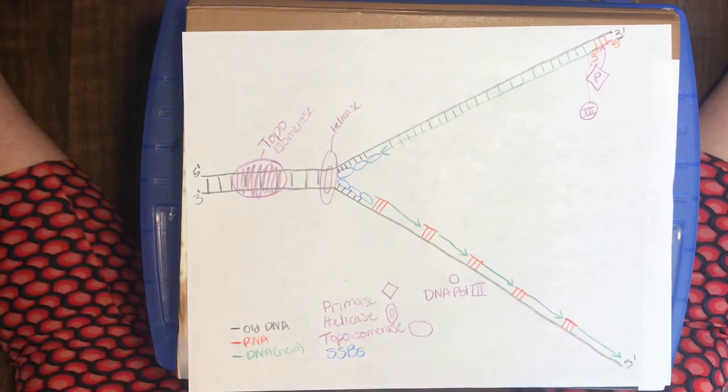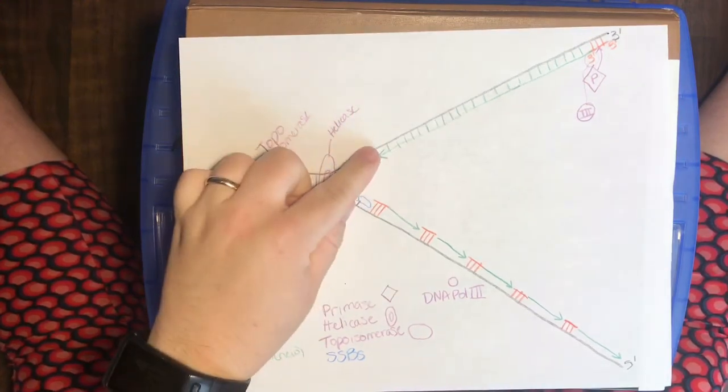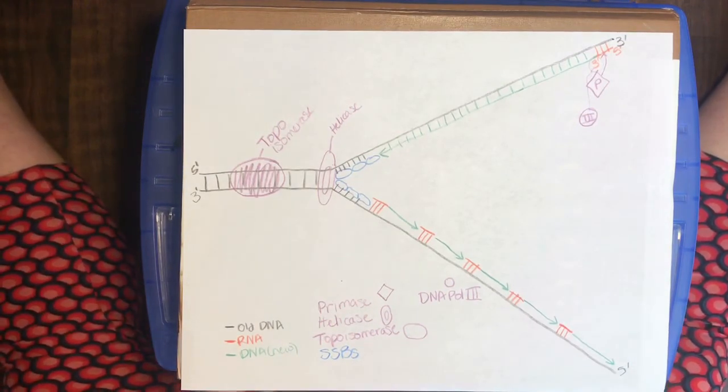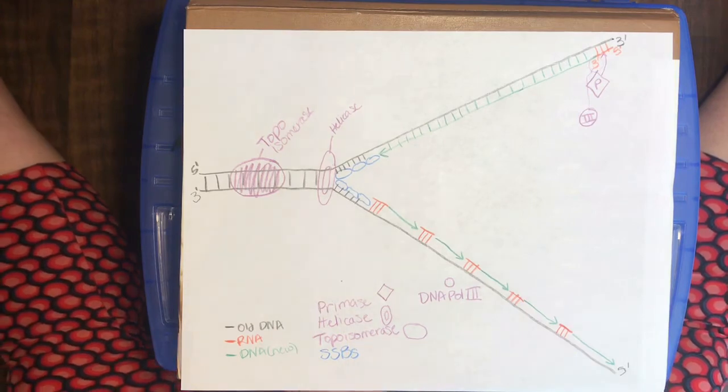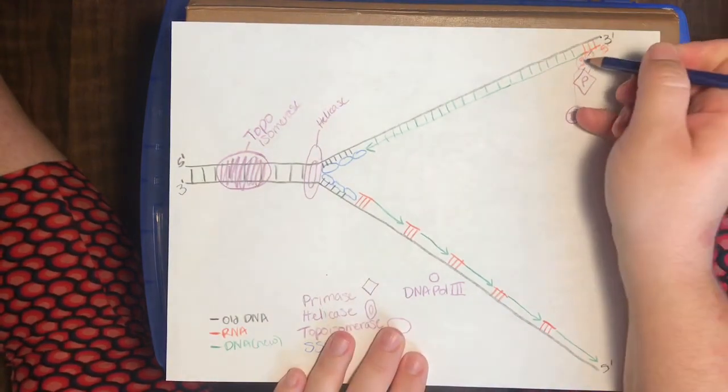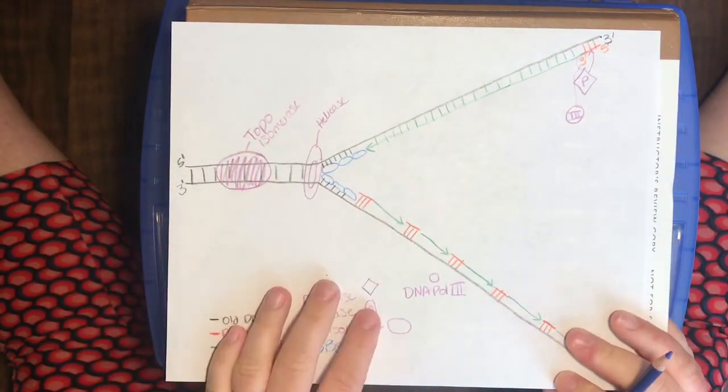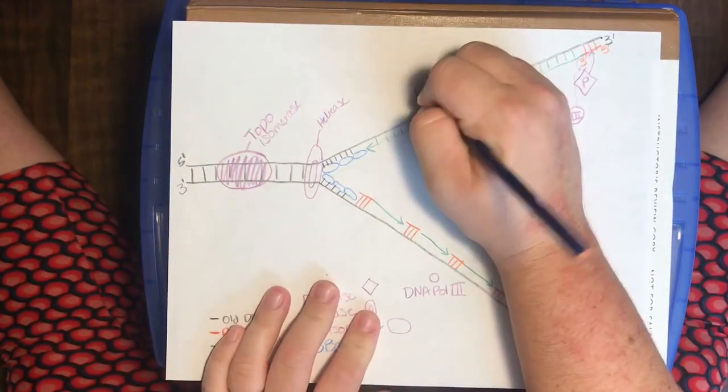So you can tell right away that things look a little different from the top strand versus the bottom strand. We have these stops and stutters. And so, this takes us to our second structural element that I want to talk about today. You see how this is all one continuous strand and it is following helicase as it goes down the fork? We call this the leading strand.